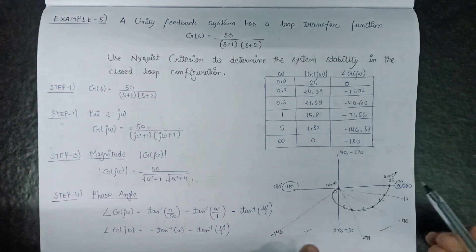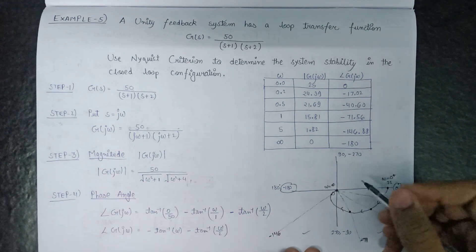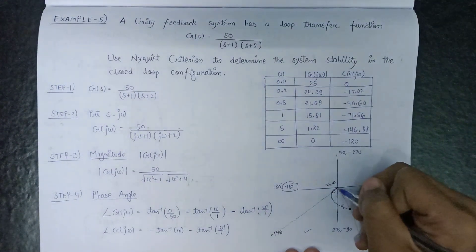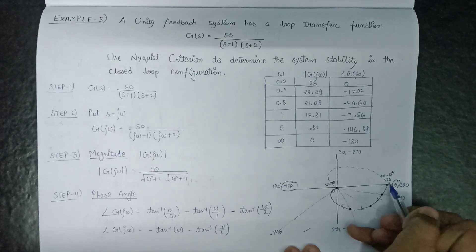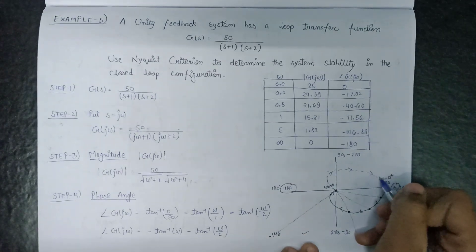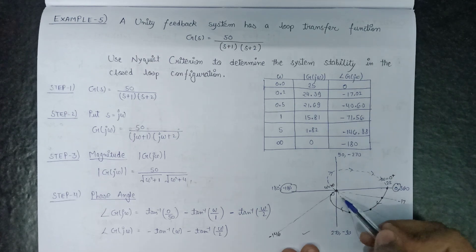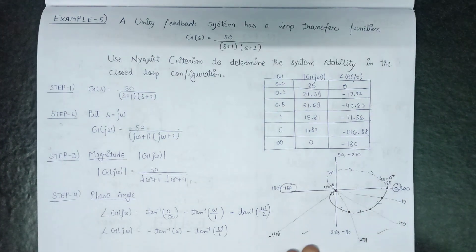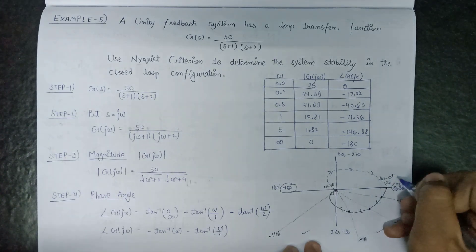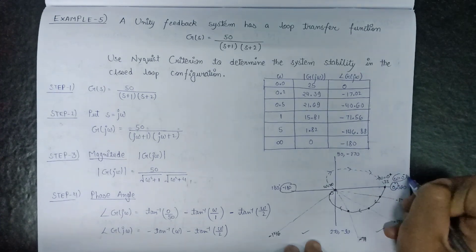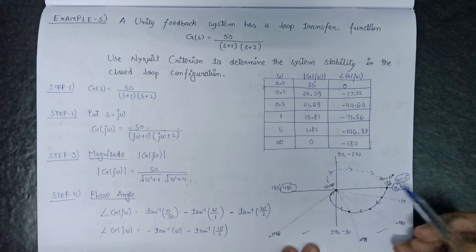Since the Nyquist plot is the mirror image of the polar plot, we can easily draw it on the basis of the polar plot. The Nyquist plot is drawn using dashed lines and follows the same clockwise direction. The point at which the Nyquist plot terminates is ω=0⁻. Since ω=0⁺ and ω=0⁻ both touch at magnitude 25, this is a perfect plot.